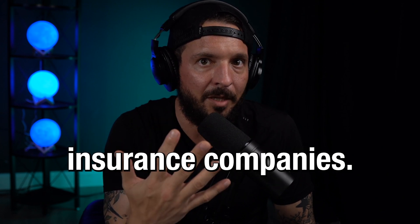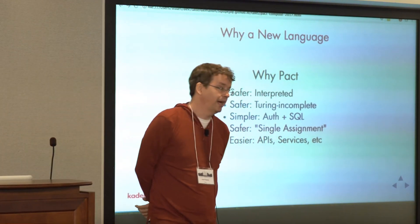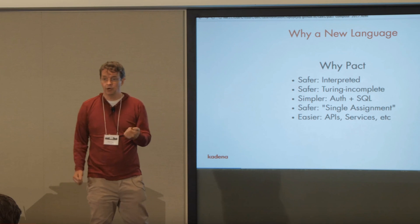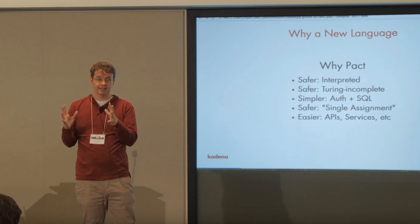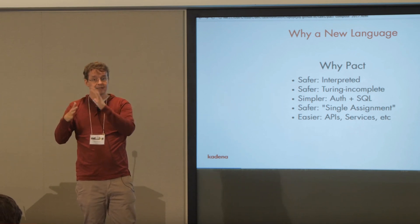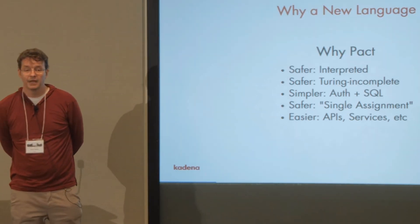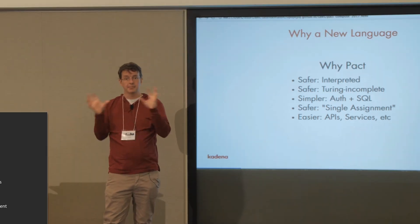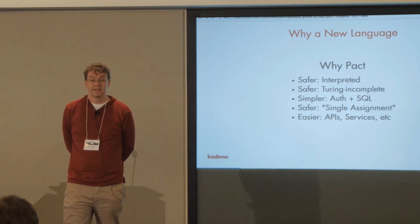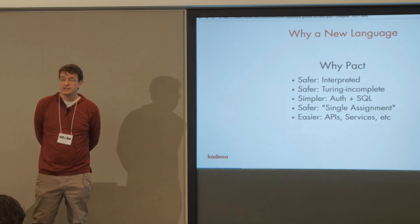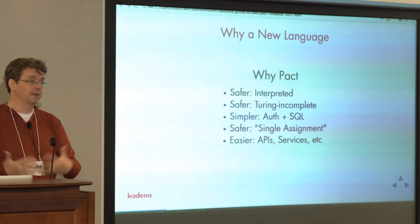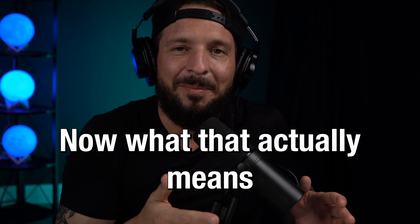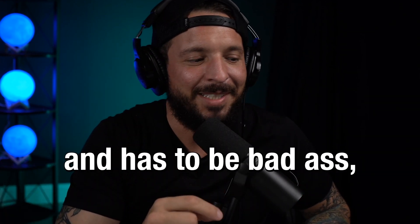So why Pact? The language we wrote is based on ideas about what a safer language looks like. First, it's interpreted — at any point in time, the code that executes is the code you wrote, not some lowered version of it. It's also safer in the Bitcoin-inspired idea that it's not Turing complete in a way that guarantees termination — it will always terminate. It's simpler in that it really just tries to do database and authorization. It's safer in that it doesn't allow you to reassign variables. And lastly, it's easier in the sense that once you write code in Pact, you get an API out of it for free.